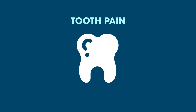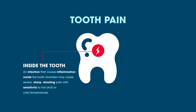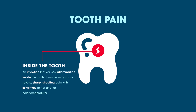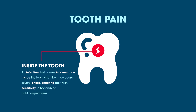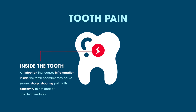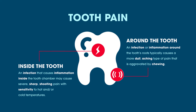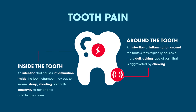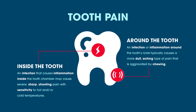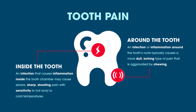There are two main ways to break down tooth pain. Inside the tooth: an infection that causes inflammation inside the tooth chamber may cause severe, sharp, shooting pain with sensitivity to hot and/or cold temperatures. Around the tooth: an infection or inflammation around the tooth's roots typically causes a more dull, aching type of pain that is aggravated by chewing.